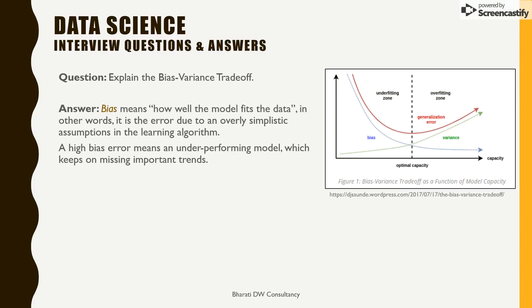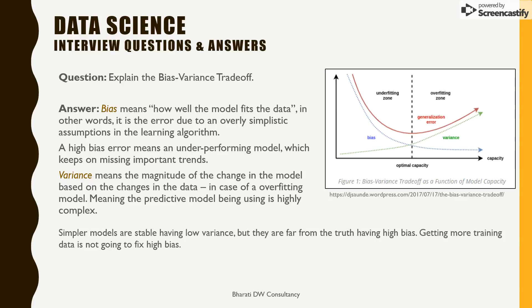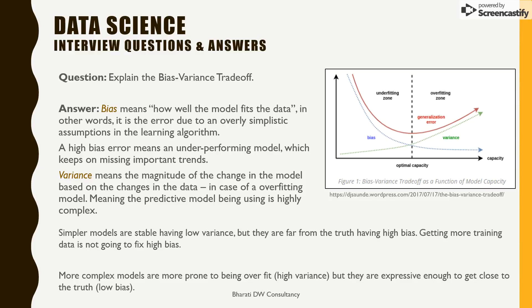Bias means how well the model fits the data — specifically, the error due to overly simplistic assumptions in the learning algorithm. Getting more data is not going to solve a high bias problem; it's an underperforming model. Variance, on the other hand, means the model is very sensitive — the magnitude of change in the model based on change in data is high, making it highly complex. Simpler models tend to be more stable with low variance but that leads to high bias.